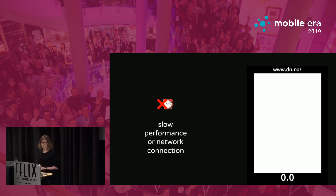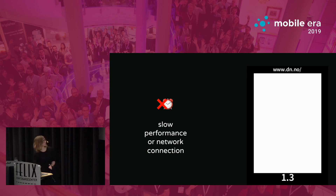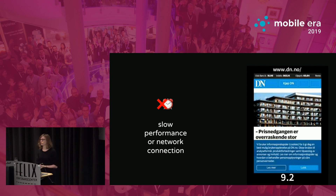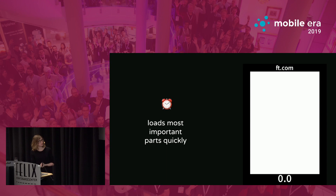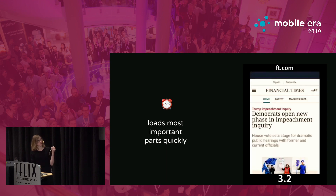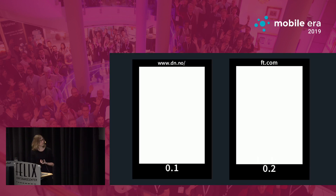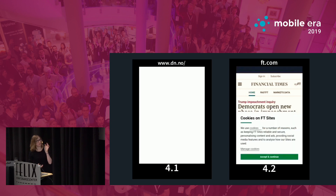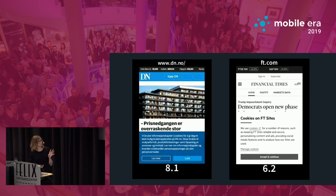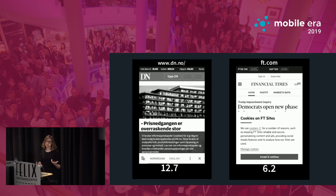Another problem is performance and network connection. In developing countries, people don't have reliable access to data because it is really expensive, so they will often be offline. A Norwegian news website takes around six seconds to load on a mobile network, which is quite long. The Financial Times is optimized on performance — you already see some content after two seconds. When you compare them, that really makes a difference. If it takes really long to load, the experience is bad. Skeleton screens with animations can be really useful to give the user an idea of what is loading.